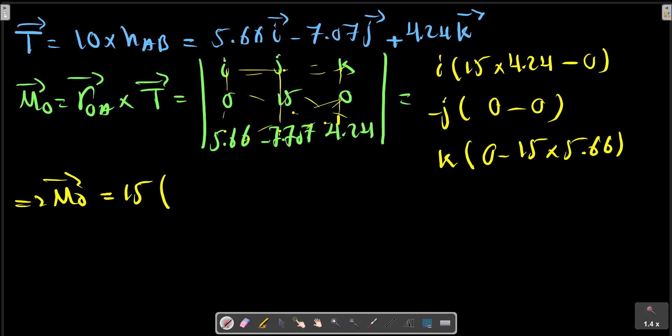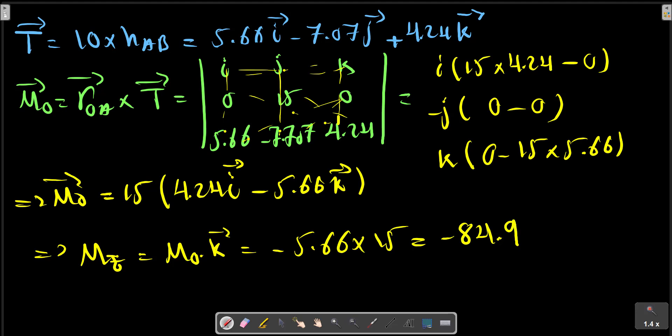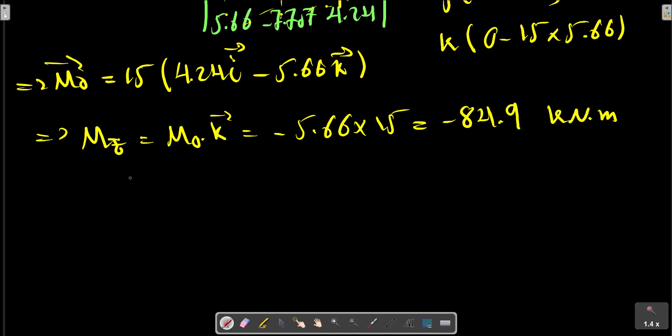MZ equals MO dot K. The final answer is 15 times (42i - 5.68k), so MZ equals the z-component in kilonewton-meters.